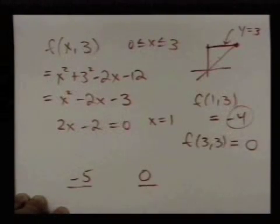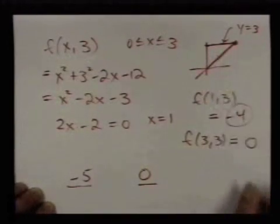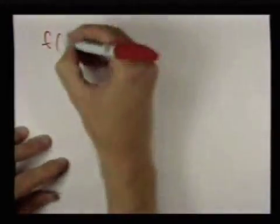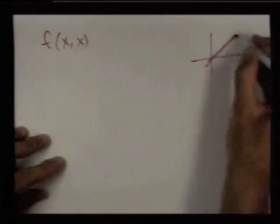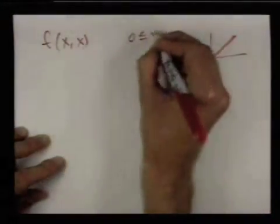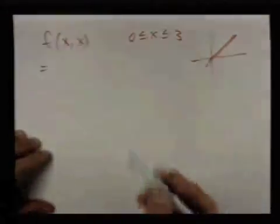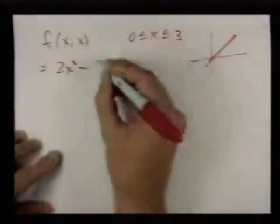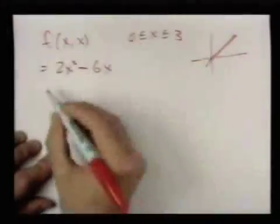So I'm looking at f(x,x) because that's the line y=x, and x is allowed to go from 0 to 3. If you plug this into the original function—plug x in for x and x in for y—you end up with 2x²-6x. We maximize this on the interval, so we take the derivative.